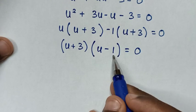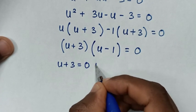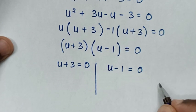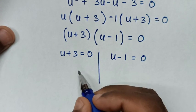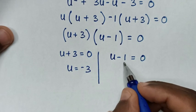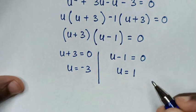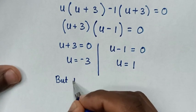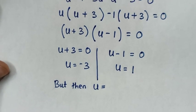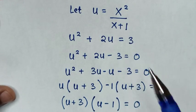Then (u plus 3) is common, so take (u plus 3) out of bracket: (u plus 3)(u minus 1) is equal to 0. From our equation we have two solutions: the first solution u plus 3 is equal to 0, and the second solution u minus 1 is equal to 0. From the first solution, u is equal to negative 3, and from the second, u is equal to 1. Since u equals x squared over (x plus 1).